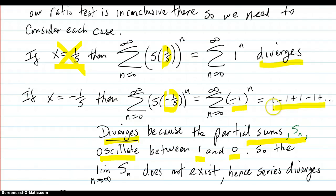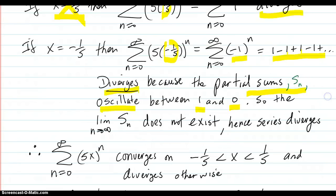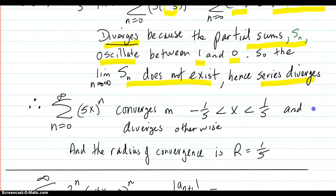So it's 1, then 0, then 1, then 0. So that limit does not exist. Hence the series diverges. So the entire interval happens to be just these values here, and the radius of convergence was this.